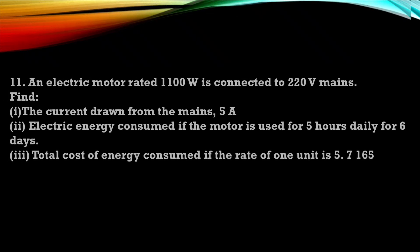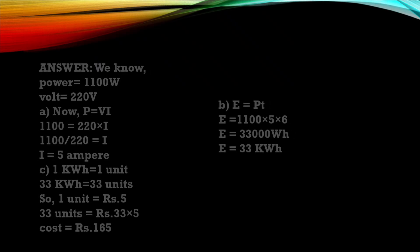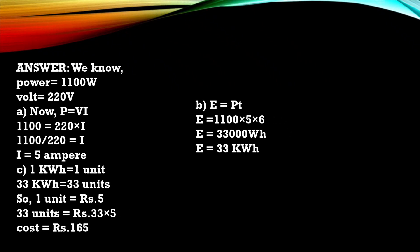Next question number 11. An electric motor rated 1100 watt is connected to 220 volt main. Find 1. The current drawn from mains 5 ampere. 2. Electric energy consumed if motor is used for 5 hours daily for 6 days. 3. Total cost of energy consumed if rate of 1 unit is Rs.5. Now here is the solution for that answer. Again as I already told you while solving numerical make sure you are writing the given, then formula, then you are going to solve it.